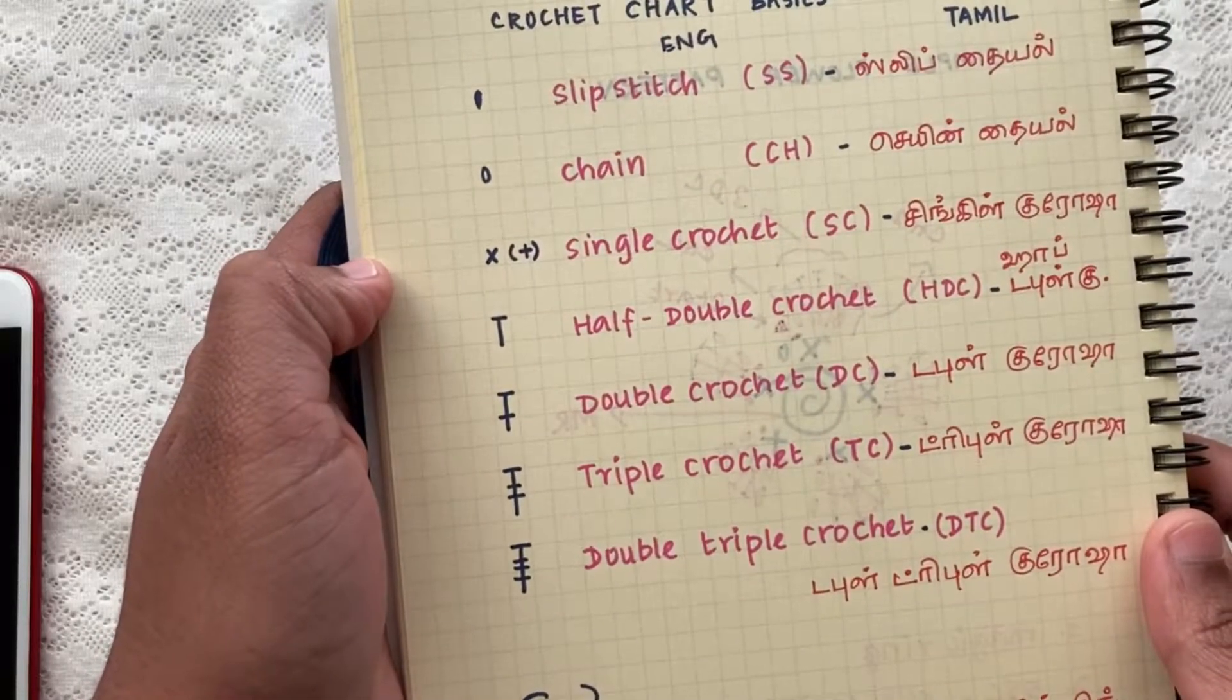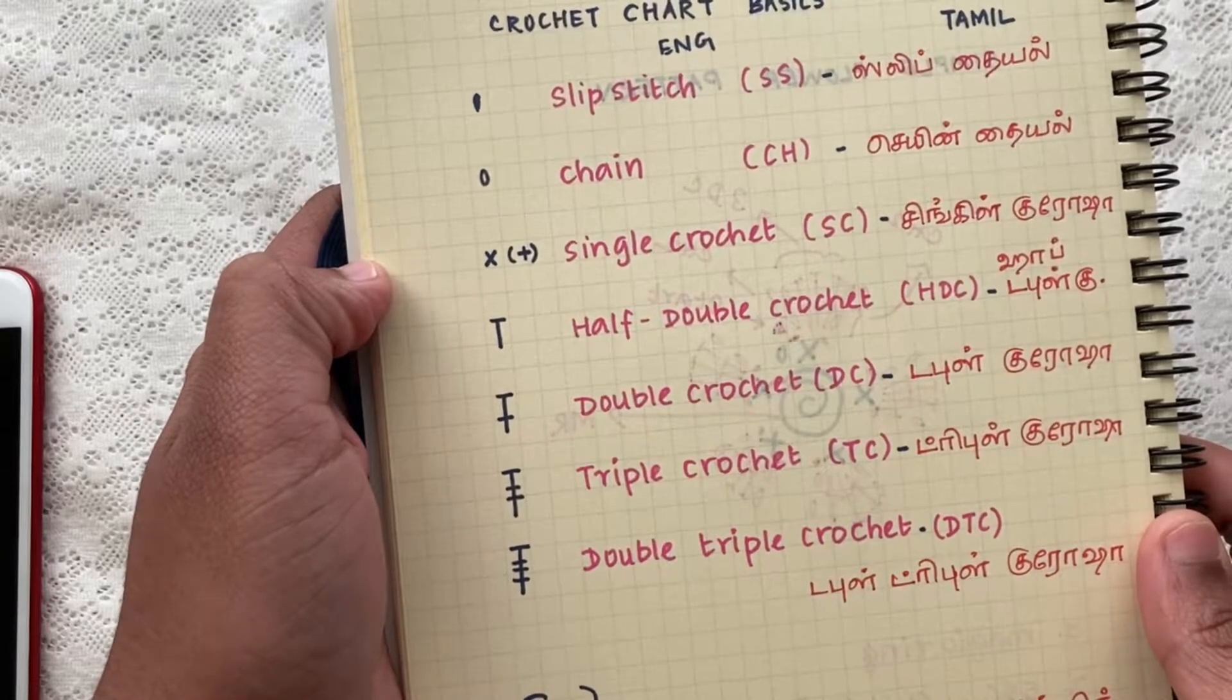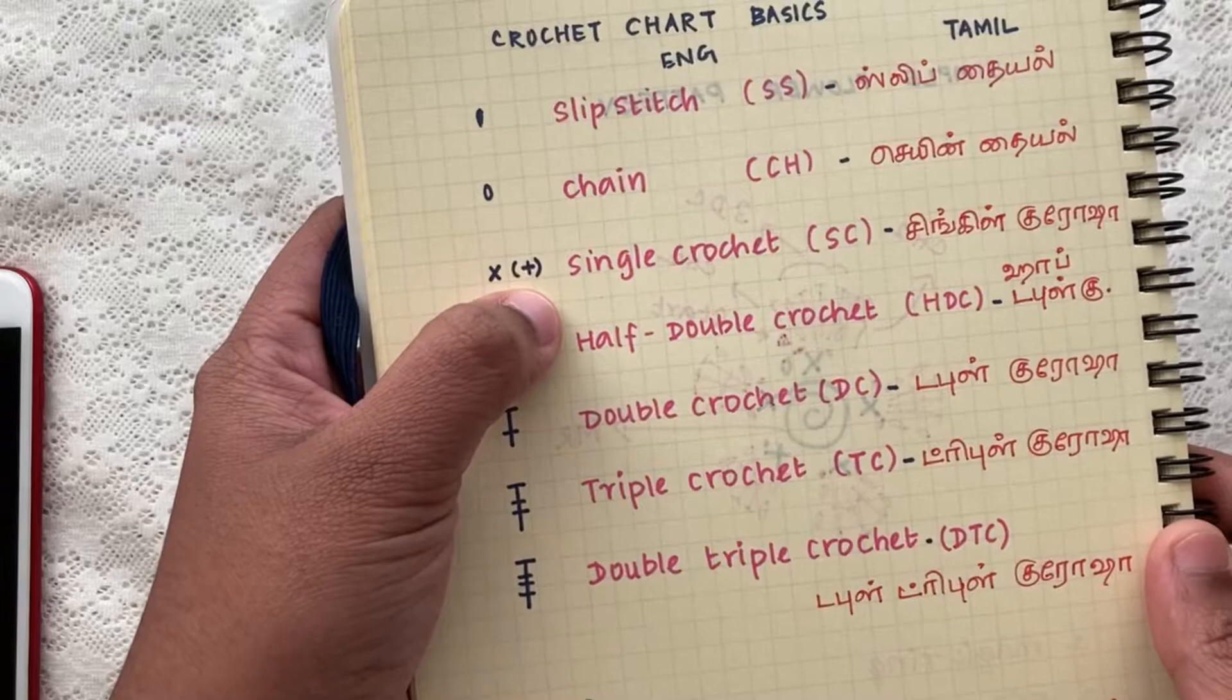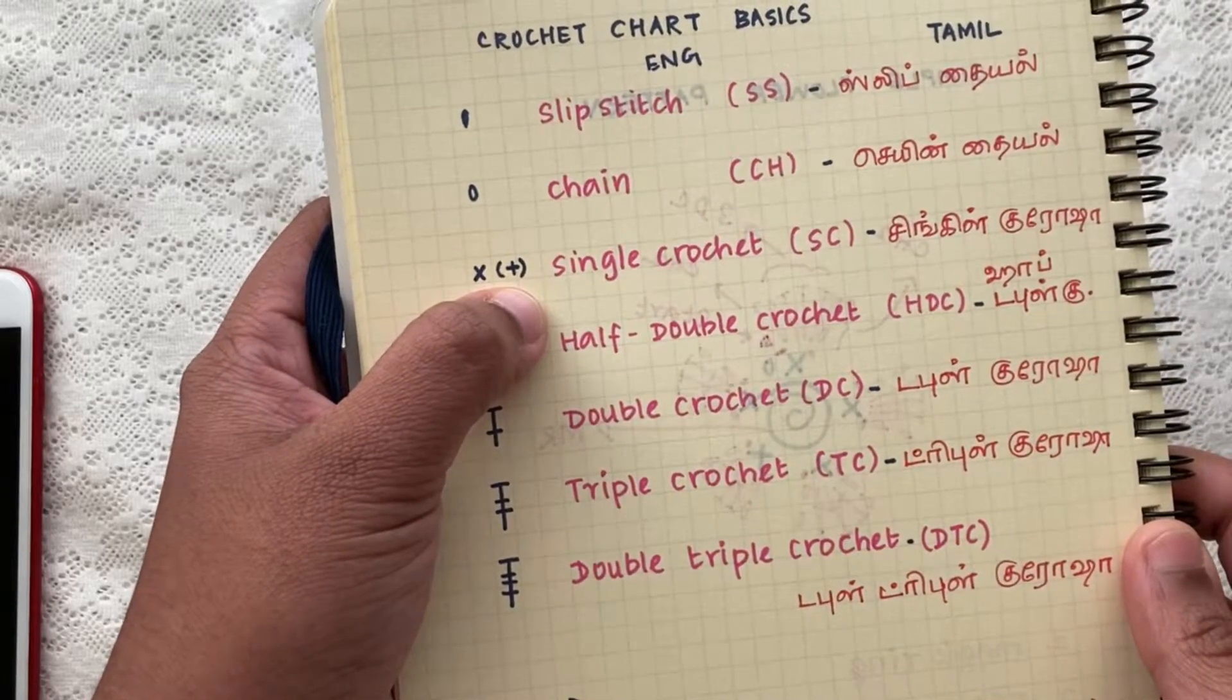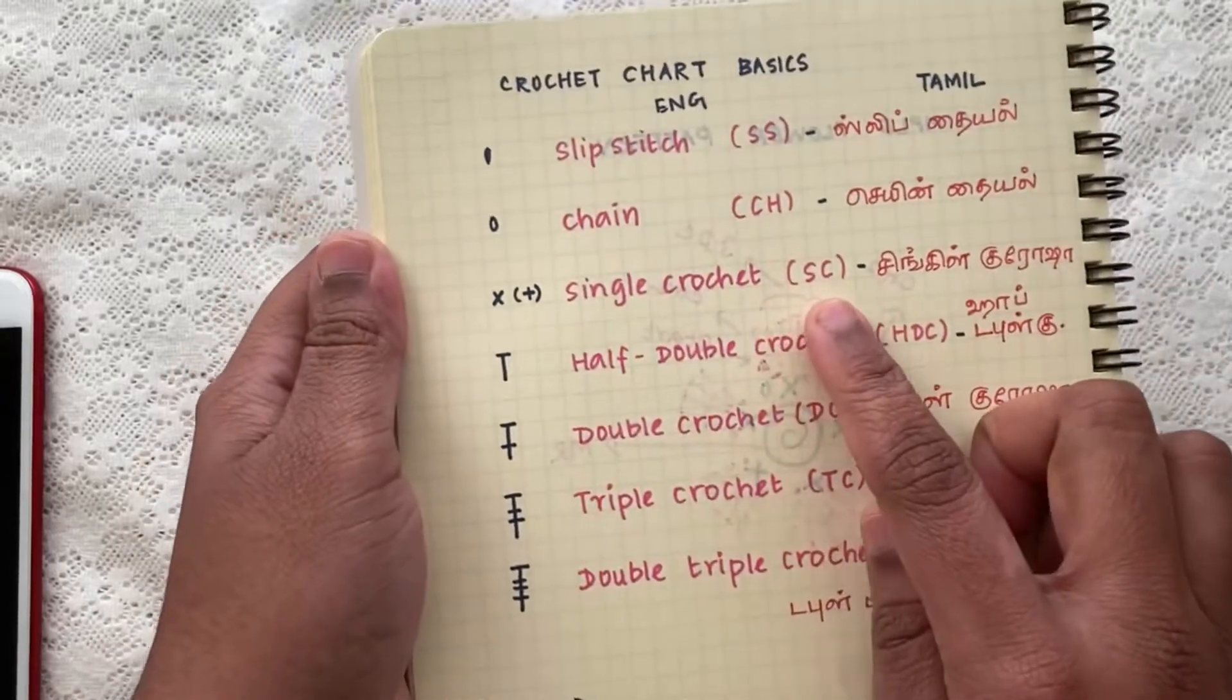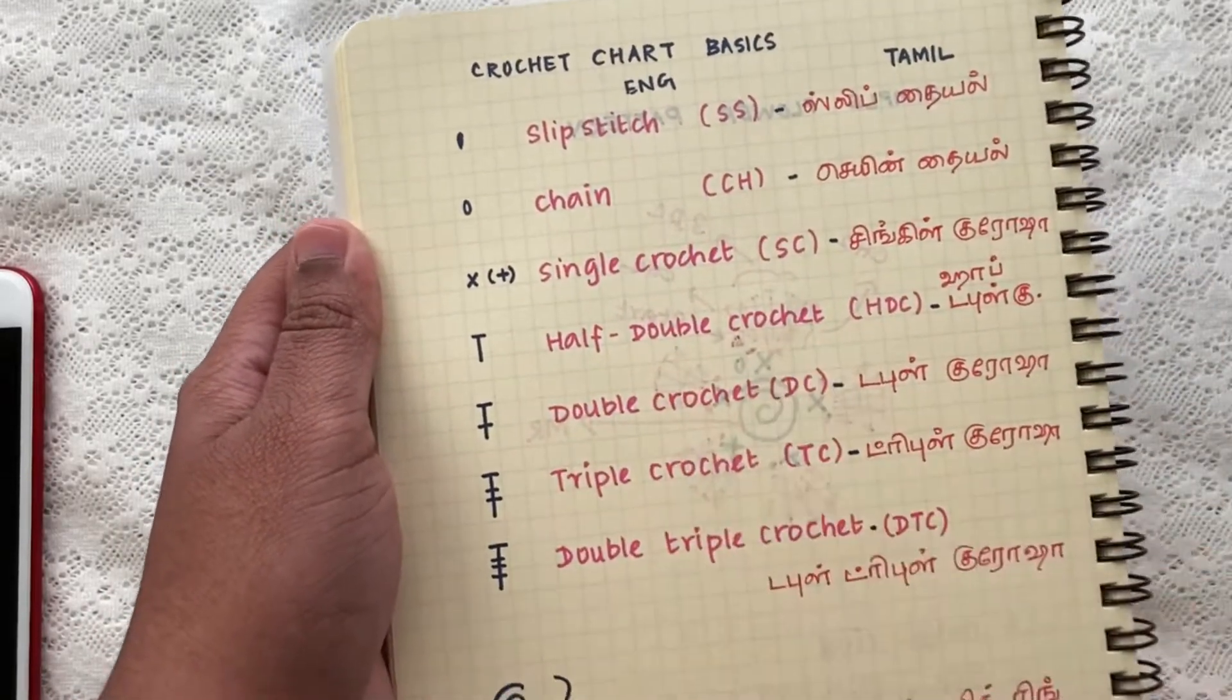For a single crochet, it's usually represented by X or multiplication mark in my patterns, or sometimes you can also find it being represented by using the plus symbol. The abbreviation is SC, single crochet.